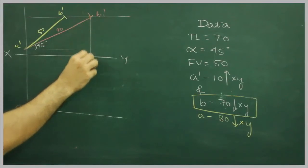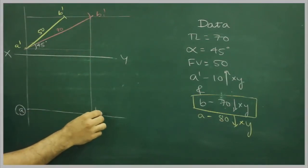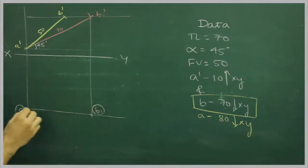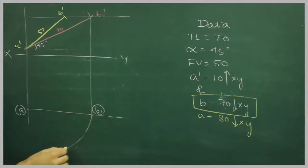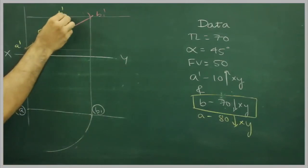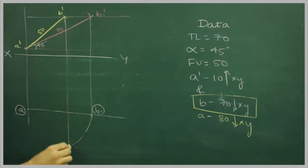Then I will take this B1 dash straight down, wherever it will cut, that will be B1. I will take A to B1, and I will rotate, and from top, I will extend this line, wherever it will cut, that will be B.